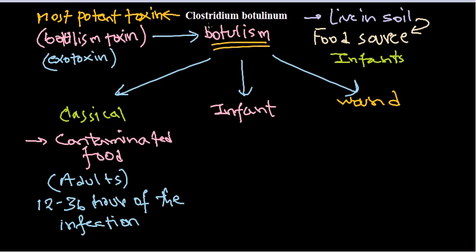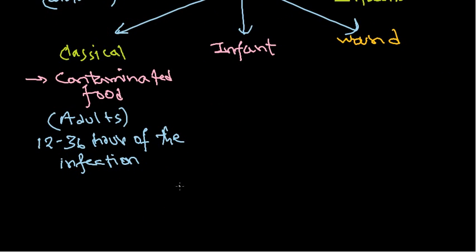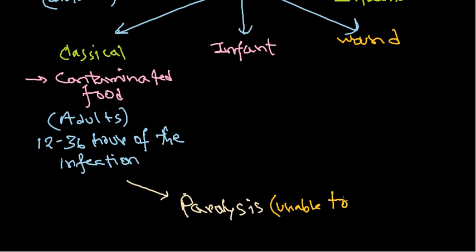Botulism is a kind of paralysis — a form where you lose the ability to contract your muscle. This paralysis is caused due to the toxicity of the Clostridium botulinum toxin.